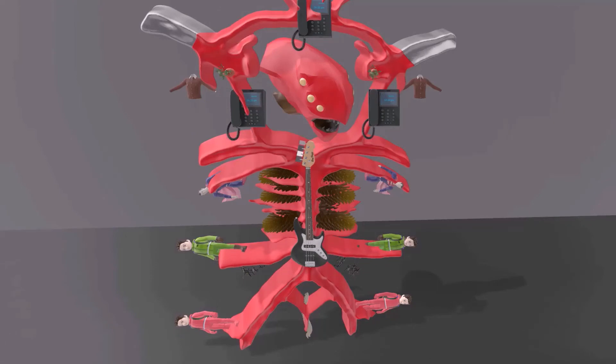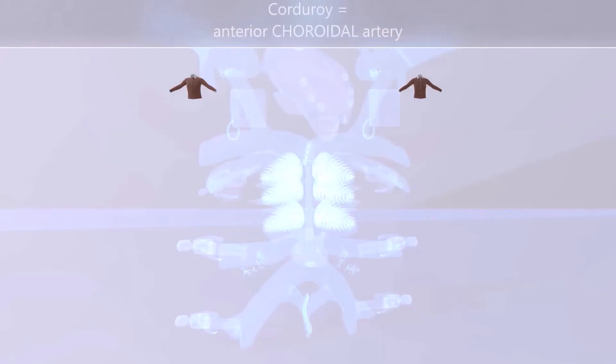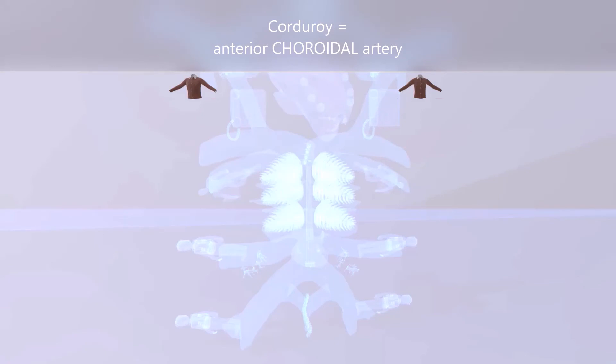Now even though he doesn't wear corduroy, he likes to have corduroy shirts with him. These corduroy shirts remind us of the choroidal artery. The anterior choroidal arteries.